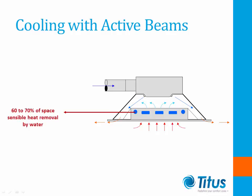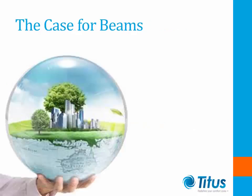Active chill beams are typically capable of removing anywhere from 60 to 70 percent of the space sensible heat with the chill water circuit itself. This enables us to theoretically reduce the primary airflow in an active chill beam system by a proportional amount.